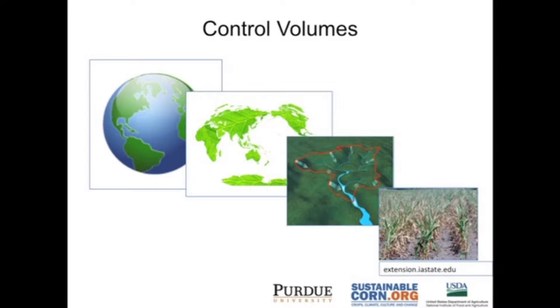We might look at the entire globe, in which case the fluxes in and out are really pretty negligible. But we might look at global land surfaces or a watershed or an individual field, which is often what we're doing as part of this project.